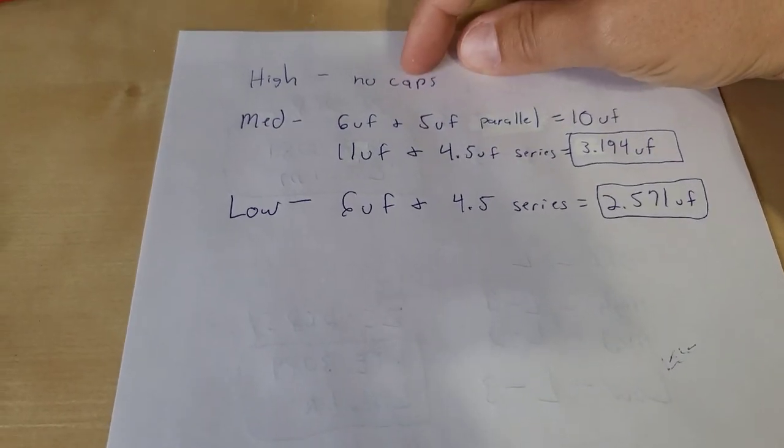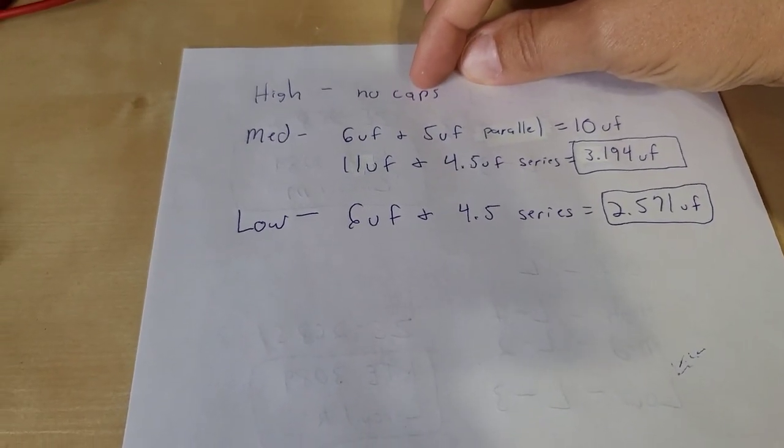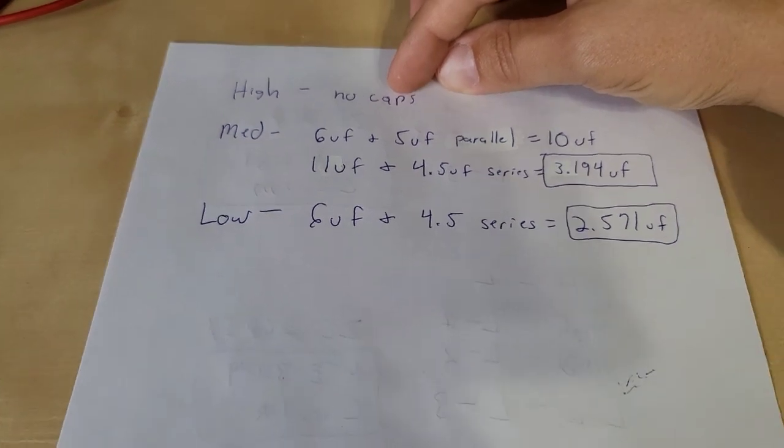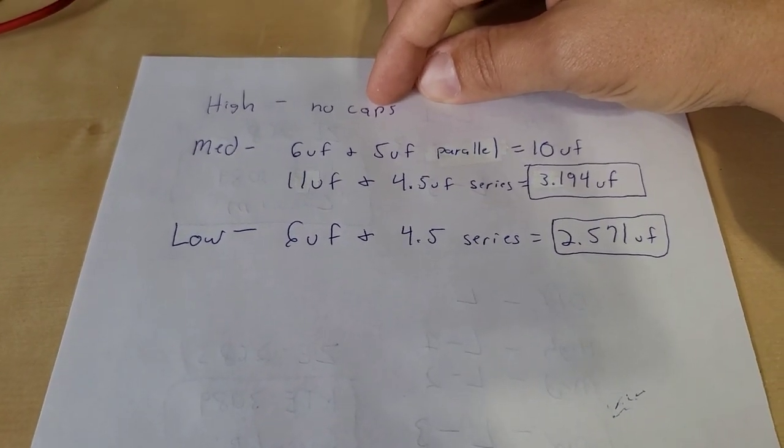So if it's set to high there's no capacitors involved. It just directly connects it to the line coming in from your house and then you got your full speed to the fan.